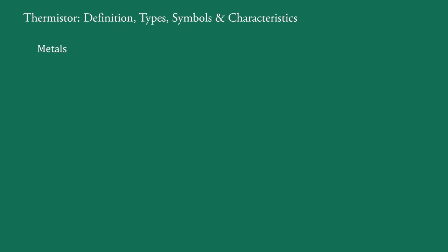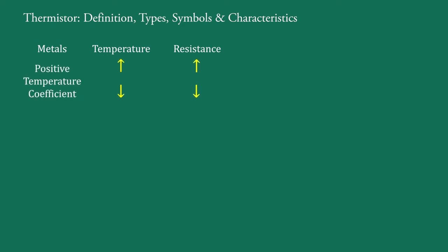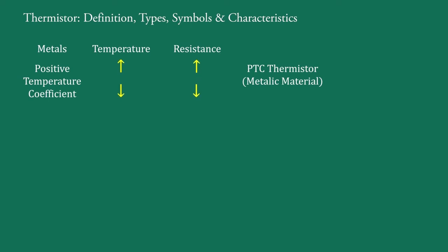In metals, if temperature increases the resistance increases, and if temperature decreases the resistance decreases. This means metals have a positive temperature coefficient. So in PTC thermistors, a metallic material is used, such as copper, silver, manganese, cobalt, nickel, etc.